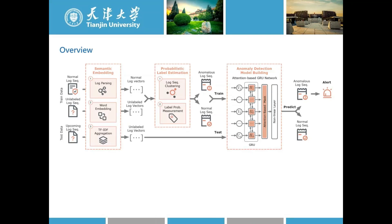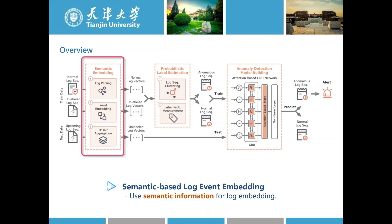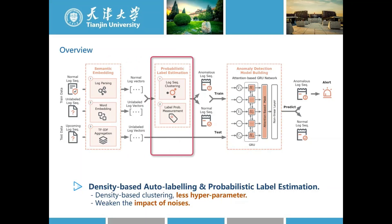This is an overview of how PLE Log works. There are three main stages corresponding to our main contributions in this work. First, logs are designed to be understood by people, so semantic information could help us get rid of the log evolution problem. We use a semantic embedding approach inspired by natural language processing studies. Then we propose a density-based auto labeling and probabilistic label estimation approach to identify normal logs and possible anomalies. To the best of our knowledge, PLE Log is the first to use an unsupervised approach for auto labeling and combine both unsupervised and supervised methods to detect anomalies.